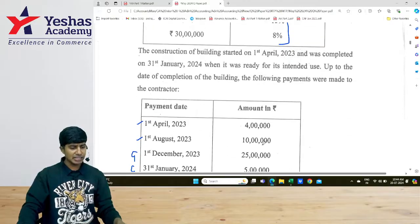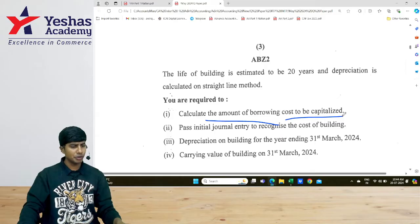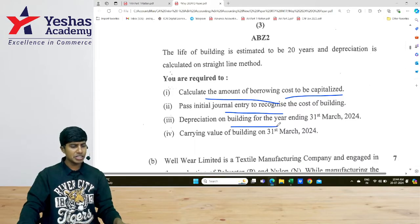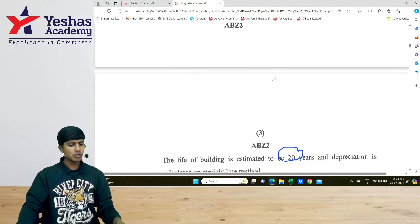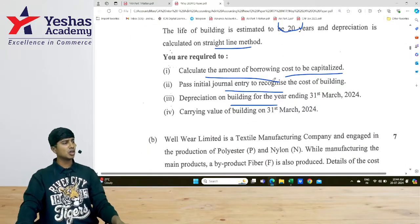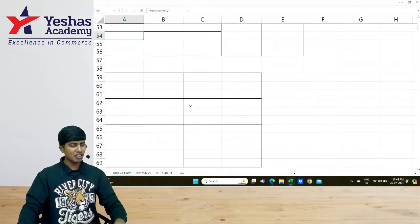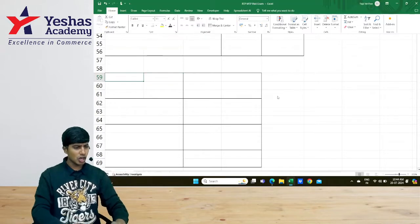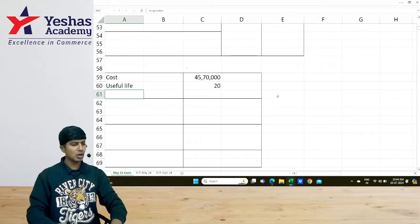Now, they further asked us to compute depreciation in this question. Capitalizing amount computation over, initial journal entry over, depreciation for the building is being asked. They are telling the useful life is 20 years and we are following straight line method. Life is estimated. Is there any scrap value given? Nothing. So, we will assume the scrap of the building is 0, 20 years is useful life, SLM method. Can we find the depreciation? Very easy.